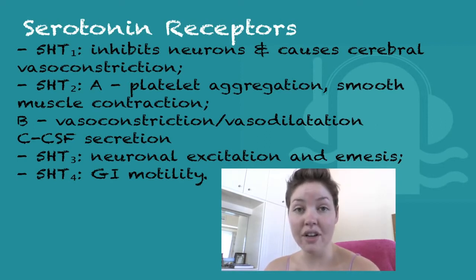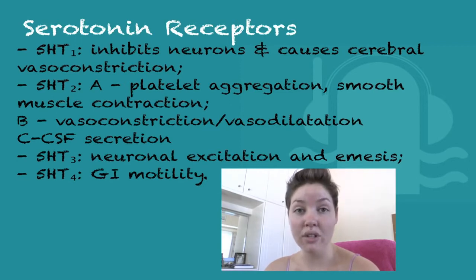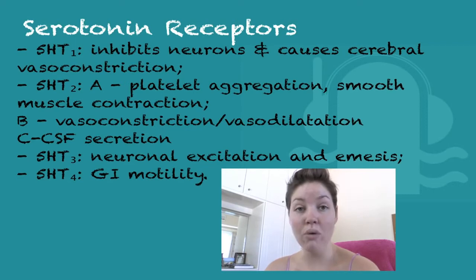Subgroup C causes cerebrospinal fluid secretion. In addition, 5-HT2 receptors all generally cause smooth muscle contraction in the bronchi, the gut, and the uterus, as well as mesenteric and pulmonary vasoconstriction. This receptor is endothelium dependent, meaning it is nitric oxide dependent in order for vasodilation to occur in the meningeal vessels and meningeal bed, as well as in the striated muscle vessels.